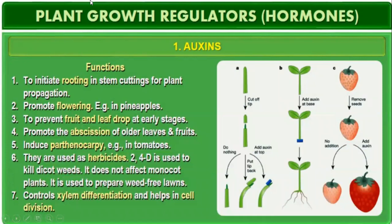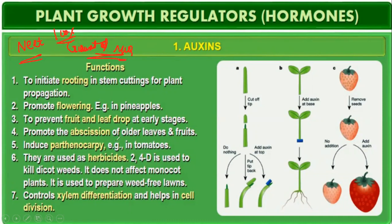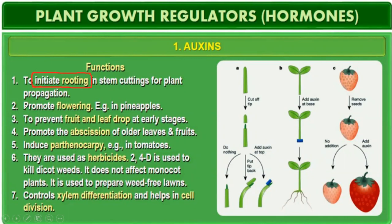Now we will discuss the functions of auxins — very important and 100% guaranteed MCQ. The first function is to initiate rooting in stem cuttings for plant propagation. Auxin promotes flowering — for example, in pineapples, flower production is induced by auxin.